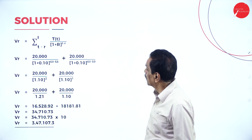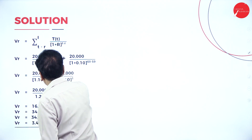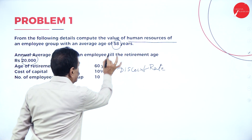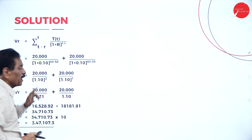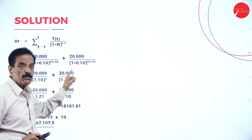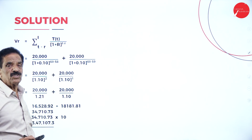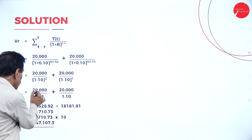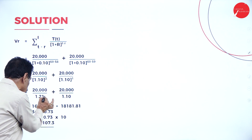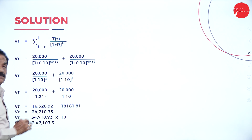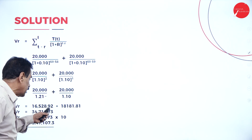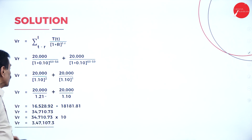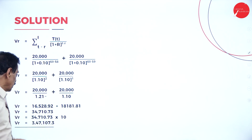Applying the formula with average age 58 and retirement age 60, discount rate 10%: 20,000 divided by 1.10 to the power of (60 minus 58) = 20,000 / 1.21 = 16,528.92, and 20,000 divided by 1.10 to the power of (60 minus 59) = 20,000 / 1.10 = 18,181.81. The total value becomes 34,710.73.